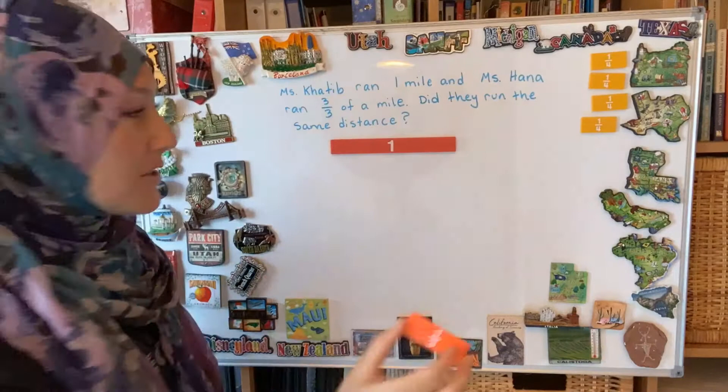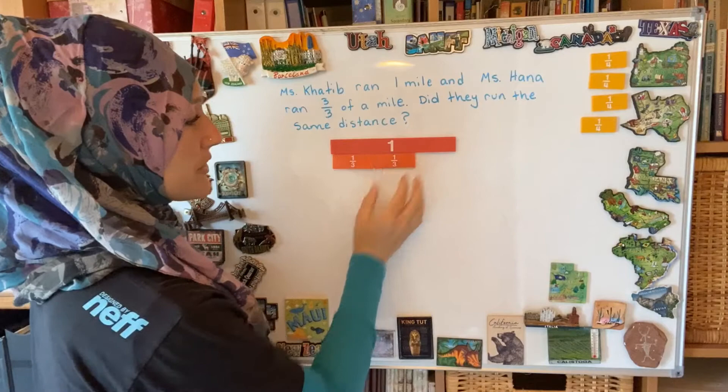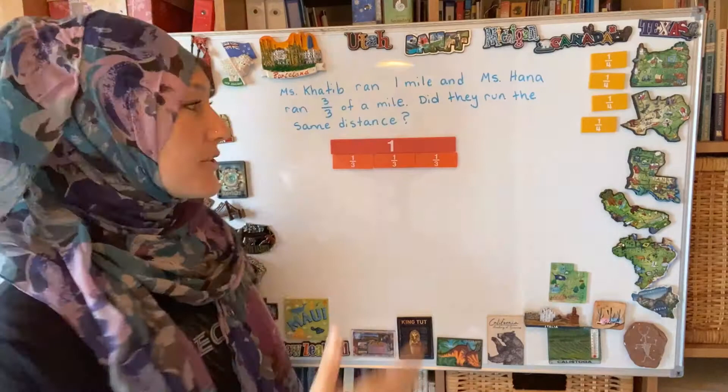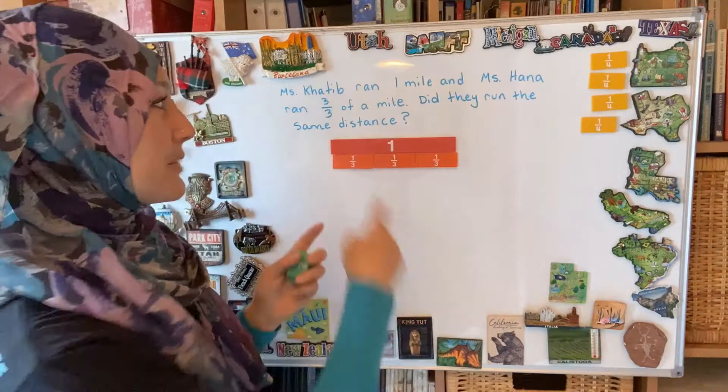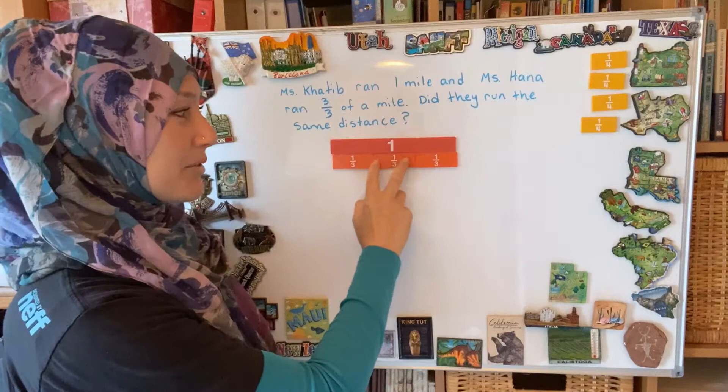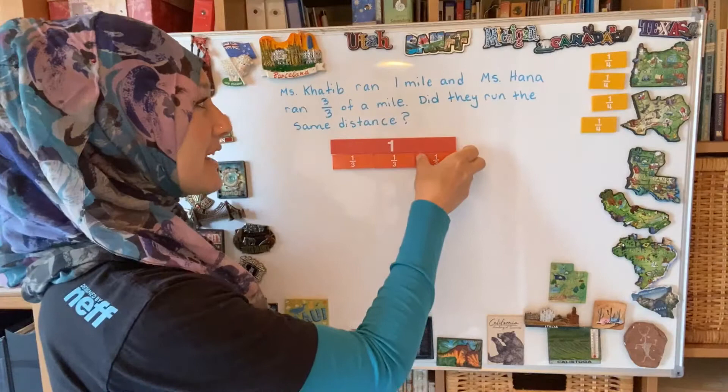So if I have one-third of a mile, another one-third — that's two-thirds of a mile — and then three-thirds of a mile. So if you have a number line and they end at the same point, those are considered equal. Yes, we ran the same amount because one mile is the same as having three-thirds, which is the same as a whole.